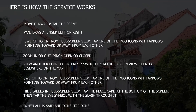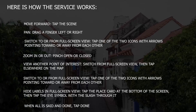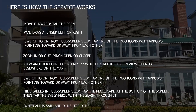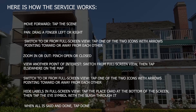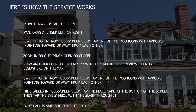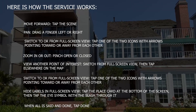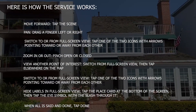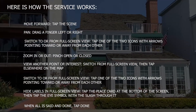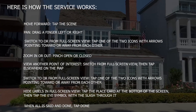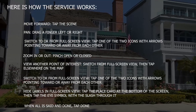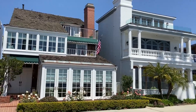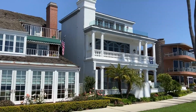To zoom in or out, pinch open or close. To view another point of interest, switch from full screen view and then tap elsewhere on the map. To hide labels in full screen view, tap the place card at the bottom of the screen and then tap the eye symbol with the slash through it. When all is said and done, tap Done.